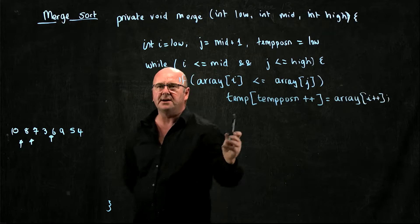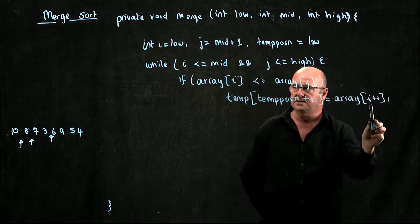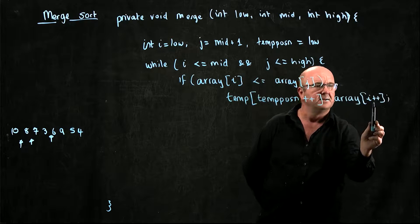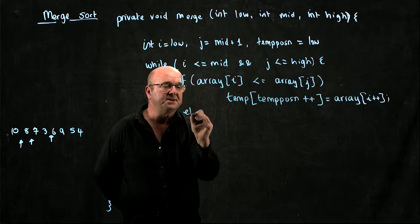So notice that what we're doing is we're incrementing both of our temporary array pointer and our i pointer. We're using them, and then we're incrementing them. If that's not true,